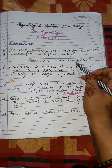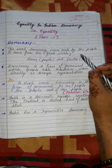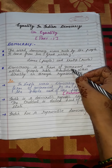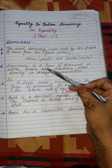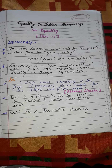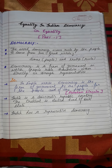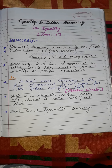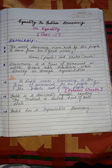Logon ki dwara hi logon par rule karna — logon par hi raaj karna. Democracy is a form of government in which people rule themselves — apni aap hi people rule karna. Either directly, ya toh woh khud pe directly rule karna, or through a representative. So it is not possible in our country to rule directly.